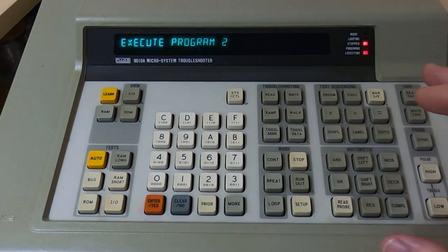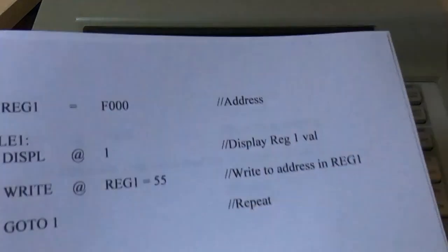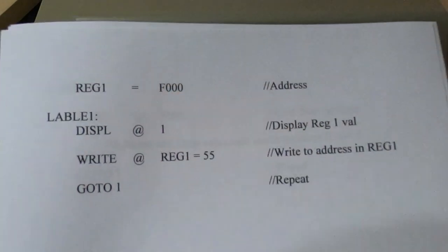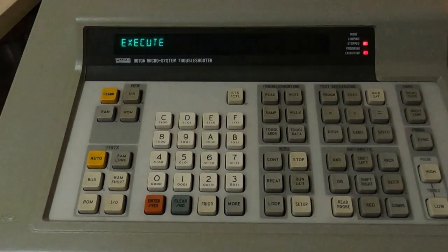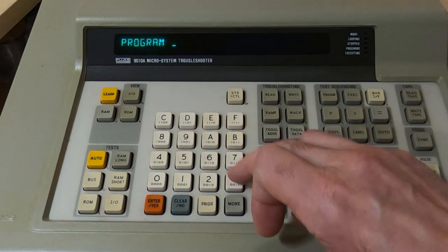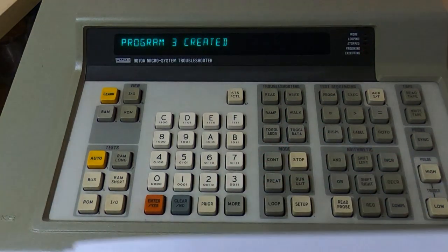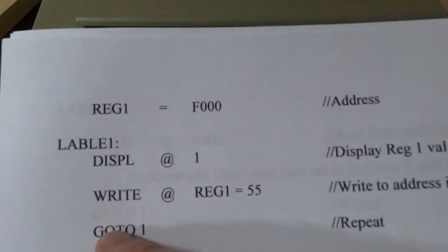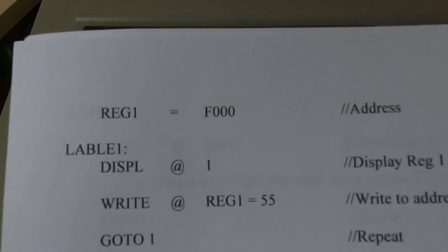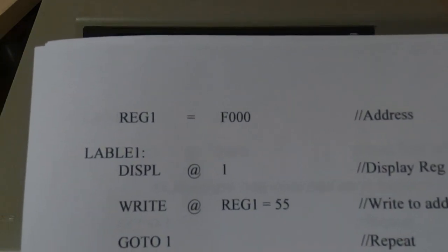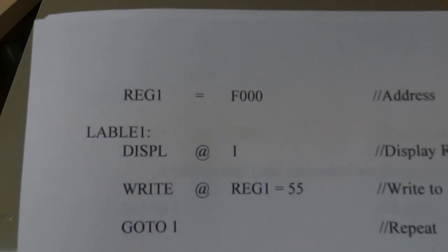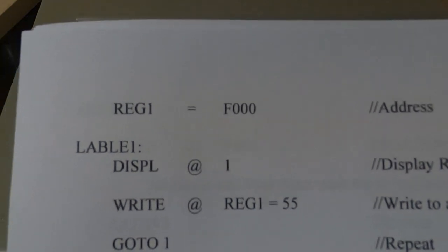A lot of the time you'll want to use registers to hold variables. The next program we enter will use a register to hold a variable value - in this case, to hold the address value. We'll generate the next program - Program 3. We'll use register one, and we don't need to use registers sequentially; we can use any register we want, as long as it's a general use register or one of the dedicated registers we specifically want to use.